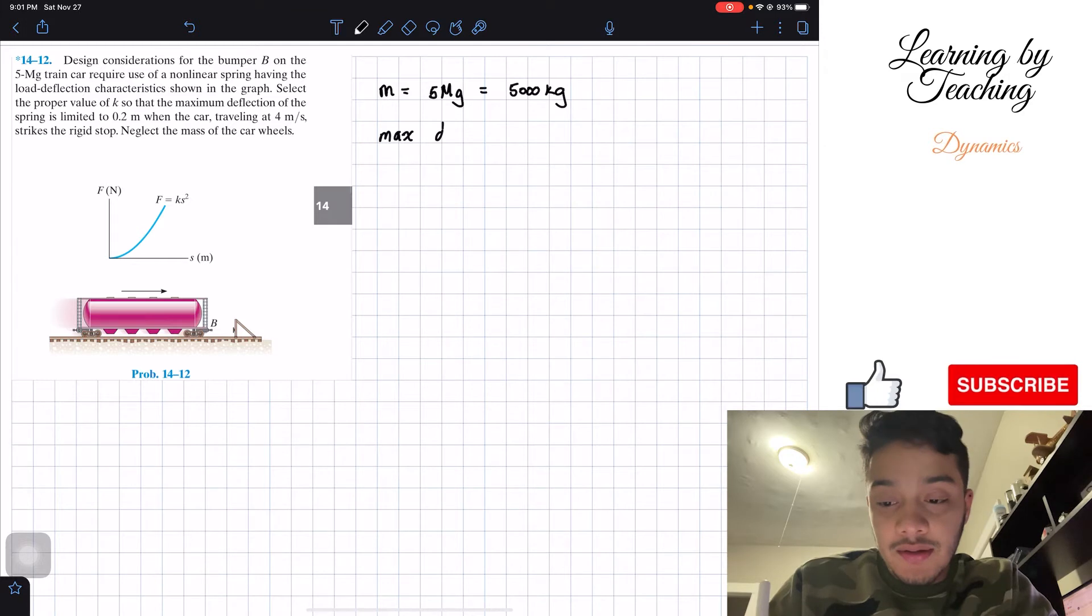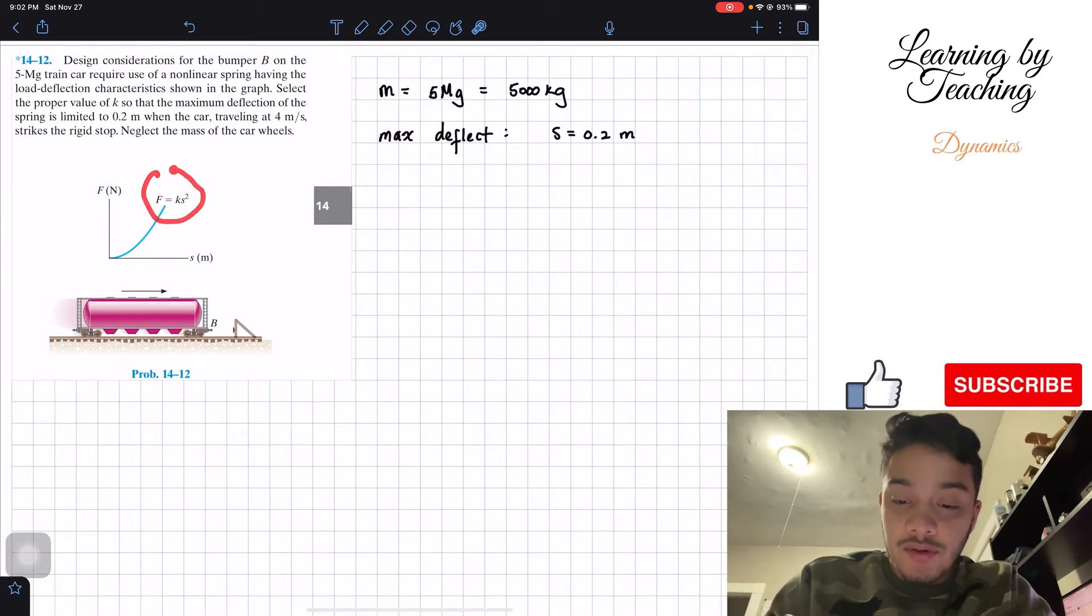They are also giving us that the maximum deflection, so I'm just going to write it as max deflect, and this is s equal to 0.2 meters. So that's the deflection for a spring.